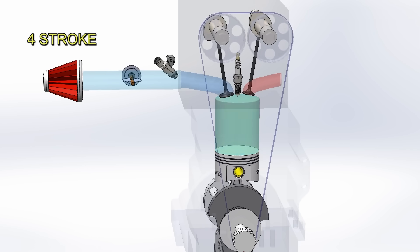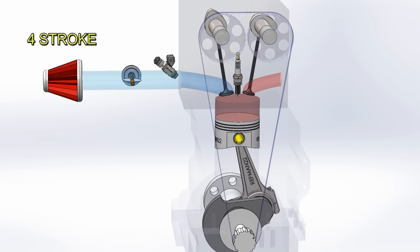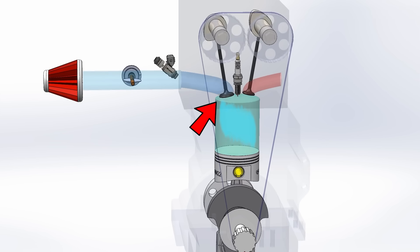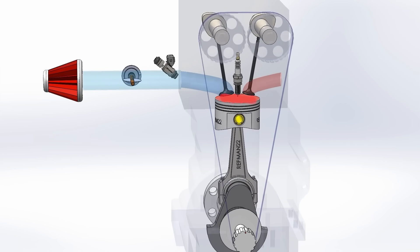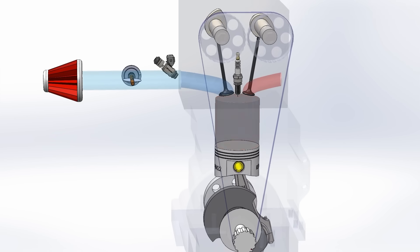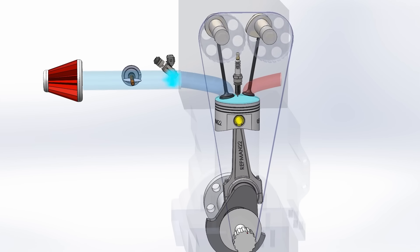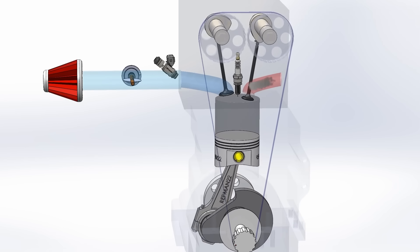On the other hand, the four-stroke engine has well-established cycles: intake, the valve closes, compresses, combusts, opens the exhaust valve, and empties the cylinder to start the process again. In this engine, one ignition occurs for every two revolutions of the crankshaft.